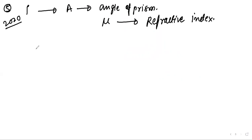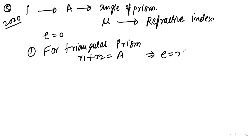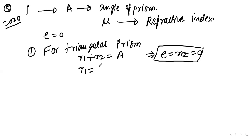Since light emerges normally, the emergent angle e = 0, so R2 = 0. For a triangular prism, R1 + R2 = A. Substituting R2 = 0, we get R1 = A.